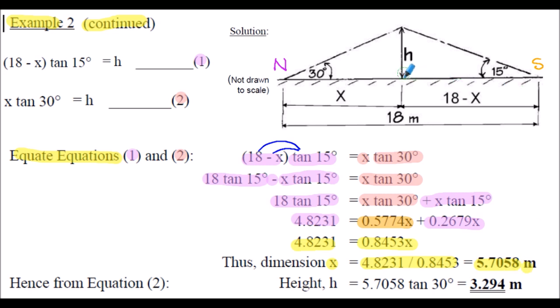It's actually height H we're trying to find. Back-substituting into Equation 2: H = 5.7058 × tan(30°), which evaluates to 3.294 metres. So the height of the wall is 3.294 metres. That's quite a complicated solution using the basic trig functions — it could of course be solved using the sine rule, but using basic trig functions, that's the approach we've taken.